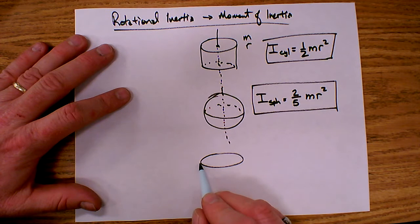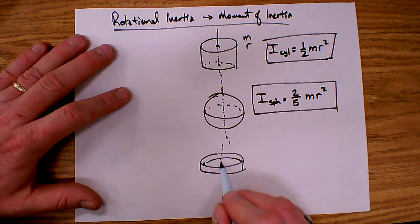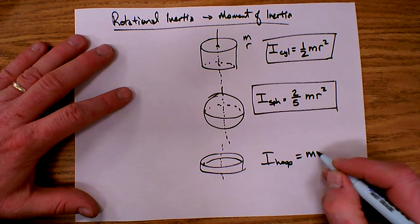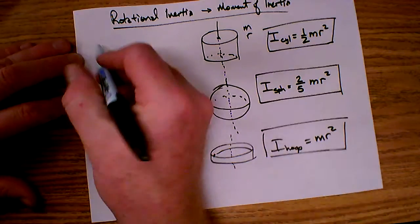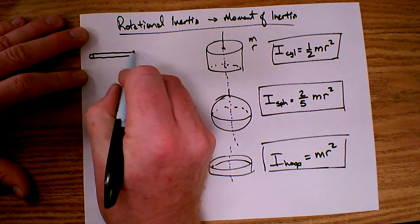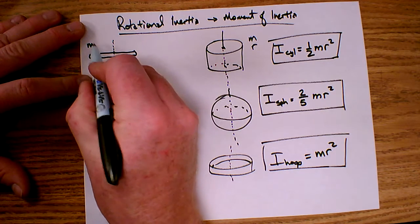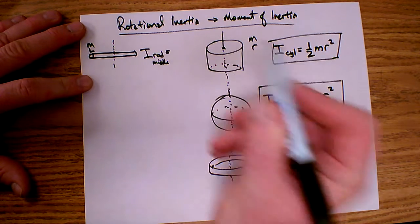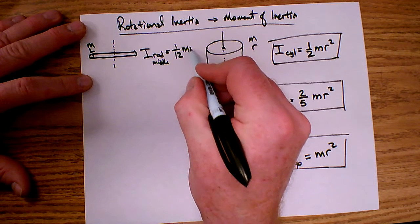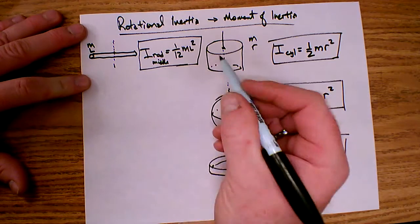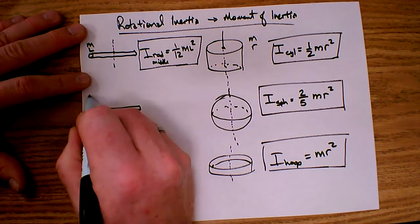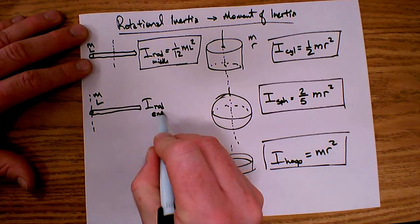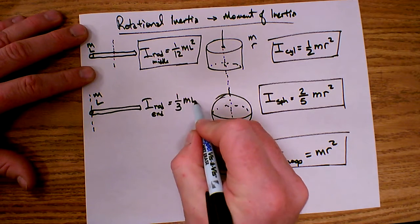As we learned before, the ring or hoop, where all of the mass is equidistant from the axis of rotation, has inertia of m r squared. For a uniform solid rod with the axis passing through the center, where the rod has mass m and length l, the inertia is one twelfth m l squared. That same uniform thin rod spun on an axis passing through the end has an inertia of one third m l squared.